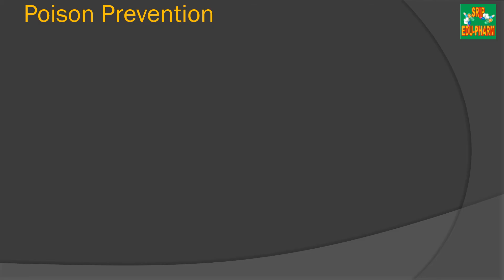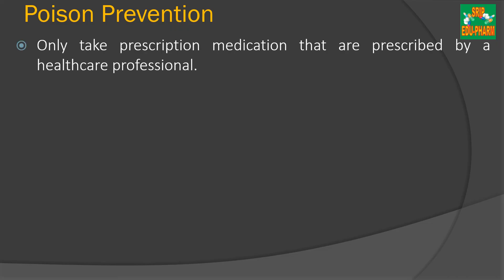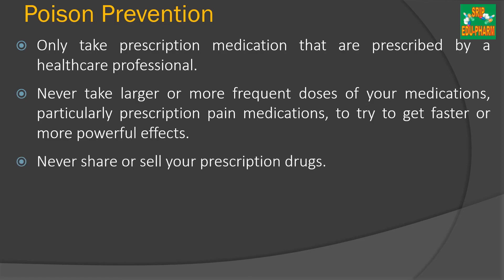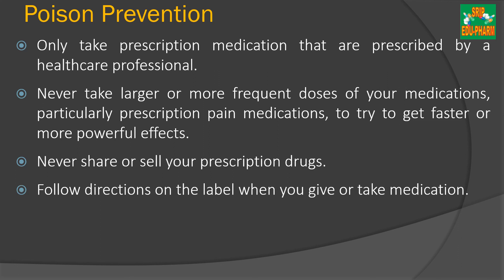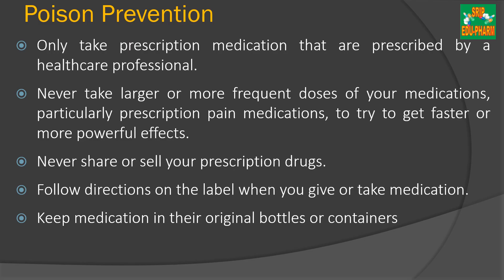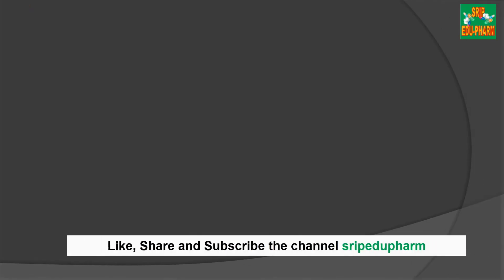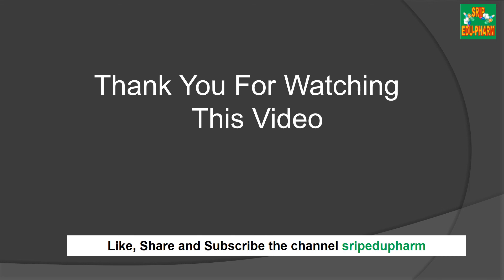Now let me describe different methods of prevention from poisoning. Persons should only take prescription medications prescribed by a physician or healthcare professional. Do not take large or more frequent doses, especially to relieve pain rapidly, as overdose may cause prescription drug poisoning. Always follow the directions of usage mentioned on the label of the medication. Medicines should always be kept in their original packaging or containers. Monitor the use of medicines prescribed for children and teenagers. By using these methods, we can prevent poisoning. Thank you for watching this video — I hope it will be helpful to understand poison and its management.